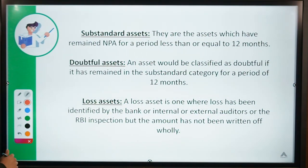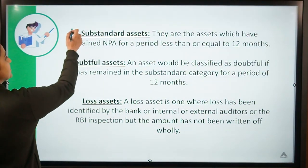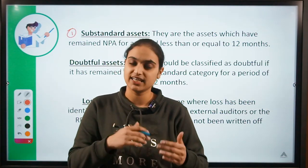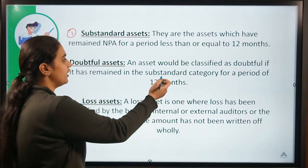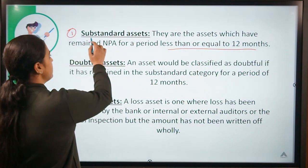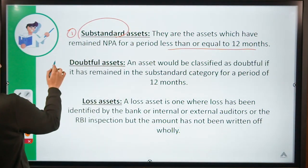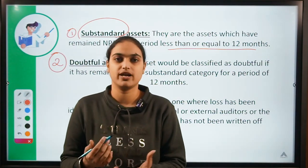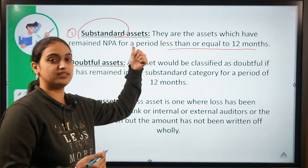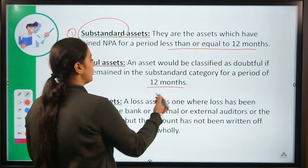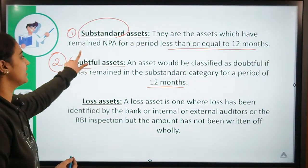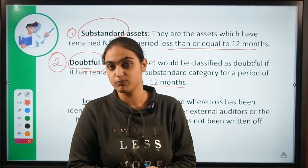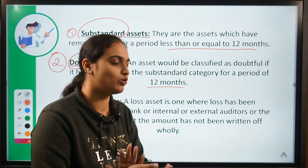The first category is substandard assets — loans or advances which have become NPAs and stay in that category for a period of up to 12 months. The second category is doubtful assets — those loans or advances which have been under the substandard category for a period of up to one year. We start doubting their effectiveness and that they won't be able to repay anymore, so we categorize them as doubtful assets.